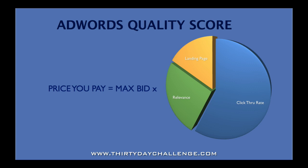That quality score is made up of three elements. The first is the relevance of your actual advert — how relevant is the advert being displayed to users when they search for your keyword phrase. You want to ensure that your actual ad is actually relevant. If I'm bidding on a term such as children's sleeping bags, my ad should actually have the words 'children's sleeping bags' in there.